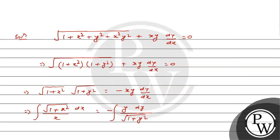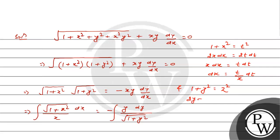Now we integrate these equations. For this, we substitute 1 plus x squared equal to t squared, so that 2x dx equals 2t dt, that is x dx equals t dt. Similarly, put 1 plus y squared equal to z squared, so that 2y dy equals 2z dz, that is y dy equals z dz.